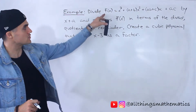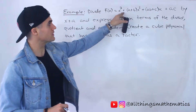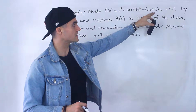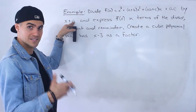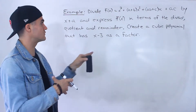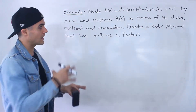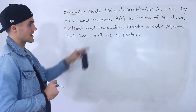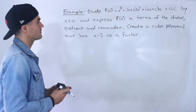We're going to take this function f of x, which is x to the power of 3 plus (a plus b)x squared plus (ab plus c)x plus ac. And we're going to divide it by x plus a. Then we're going to express f of x in terms of the divisor, quotient, and remainder. And then given all that, we've got to create a cubic polynomial that has x minus 3 as a factor. So there's lots going on here.